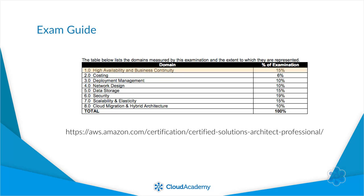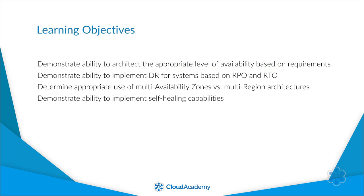We'll use some sample questions to build our practical skills and problem-solving ability in this domain. We will build our ability to architect the appropriate level of availability based on requirements, and to implement disaster recovery for systems based on RPO and RTO. We will learn to recognize and explain the appropriate use of multi-availability zones versus multi-region architectures, and build our ability to implement self-healing capabilities using AWS services.